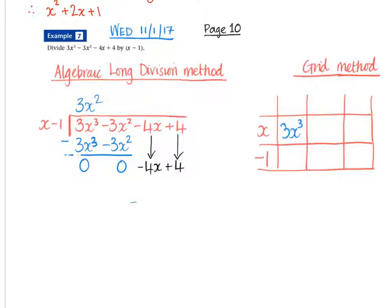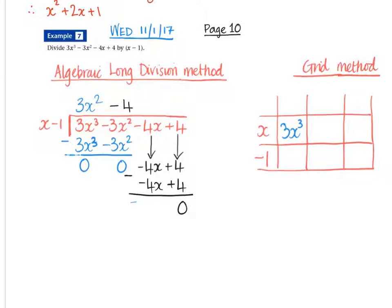Then we go about it in exactly the same way. We say to yourself: this x, what do we multiply by x to get minus 4x? And that would be minus 4. So we get minus 4x and plus 4, and remembering that we're subtracting both of them, so we get no remainder.